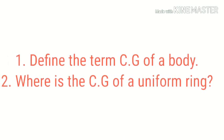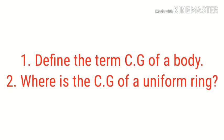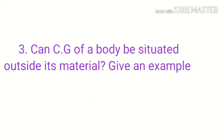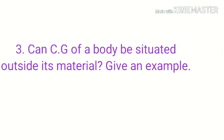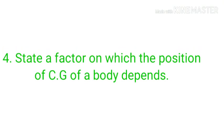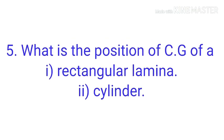A couple of questions for your self-evaluation. Define the term center of gravity of a body. Where is the CG of a uniform ring? Can CG of a body be situated outside its material? Give an example. State a factor on which the position of CG of a body depends. What is the position of CG of a rectangular lamina and cylinder?